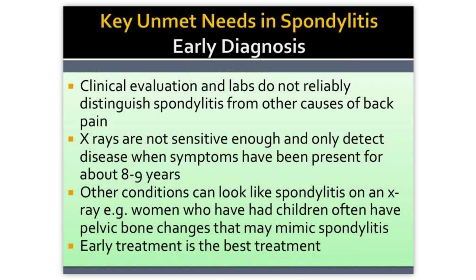We don't really have any tests that clearly distinguish spondylitis from all the other causes of back pain. If we rely on X-rays, this just is not good enough — they're not sensitive enough, and it often takes quite a while before you can see definite changes of spondylitis on an X-ray. Moreover, there are changes on X-ray that can mimic spondylitis; for example, women who have had children will have changes in the pelvic bones that look a lot like spondylitis. And increasingly it's been recognised that early treatment is the best treatment — that's when we get the best treatment responses.